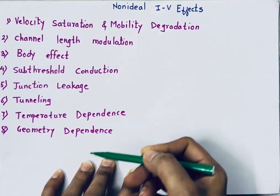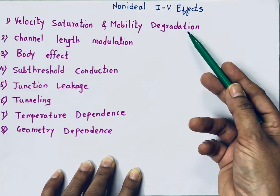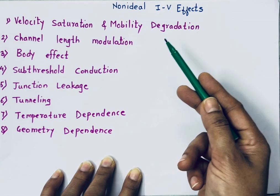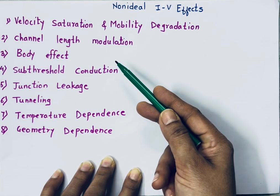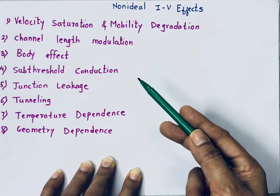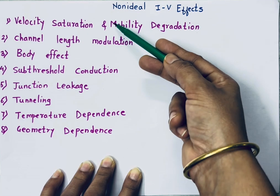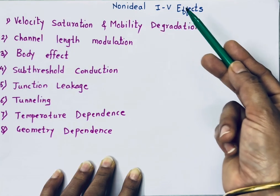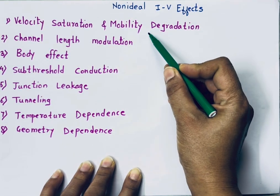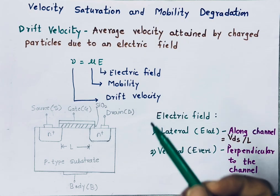The reasons they are different include: velocity saturation and mobility degradation of charge carriers (electrons or holes), channel length modulation, variations in channel length of the MOSFET, body effect (the body is the fourth terminal of the MOSFET), sub-threshold conduction, junction leakage, tunneling, temperature dependence, and geometry dependence. In this video I have discussed three important things: velocity saturation, mobility degradation, and channel length modulation.